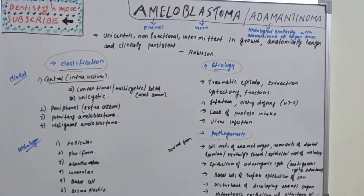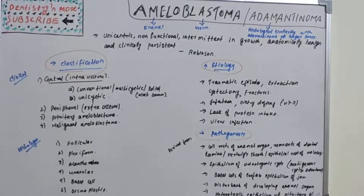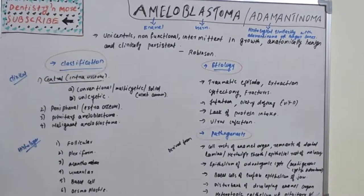All are odontogenic tumors — dental-related tissues are the cause or origin. Ameloblastoma originates from dental-related tissues. Let's now move on to ameloblastoma, also known as adamantinoma.